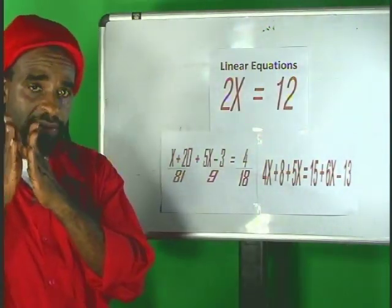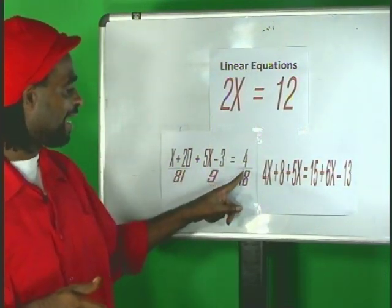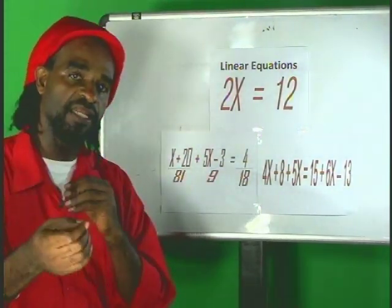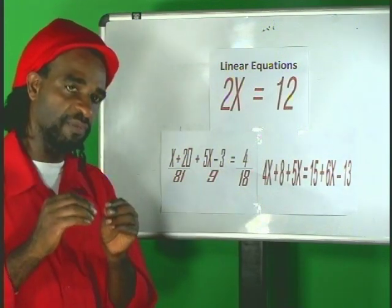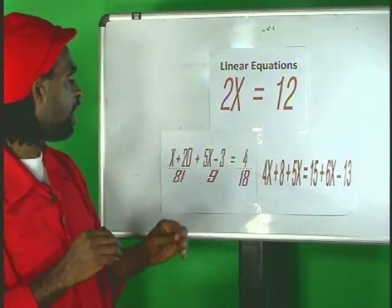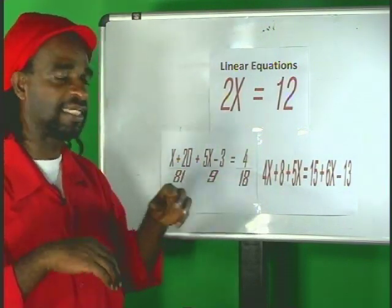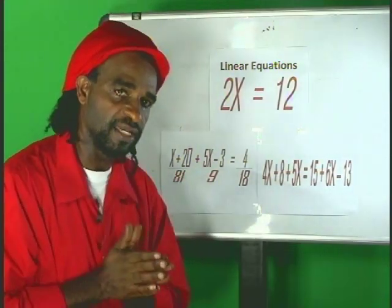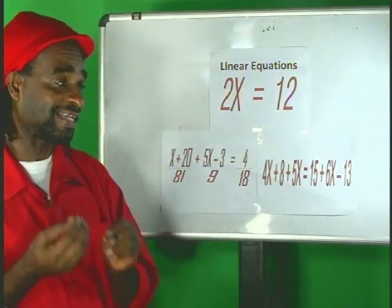The LCM, which means least common multiple for 81, 9 and 18 would be what? You will have to determine what number 81, 9 and 18 can go into without leaving a remainder. I am going to let you determine what number that is.